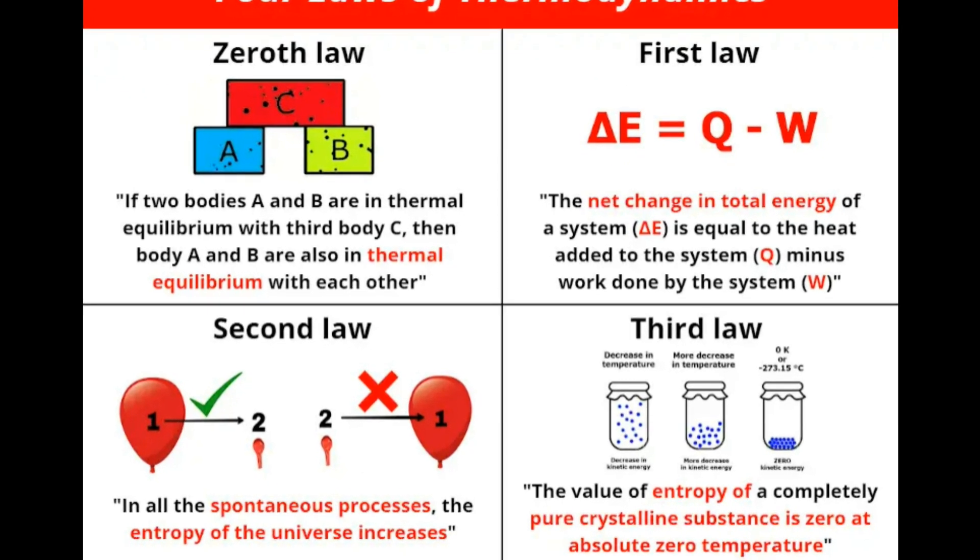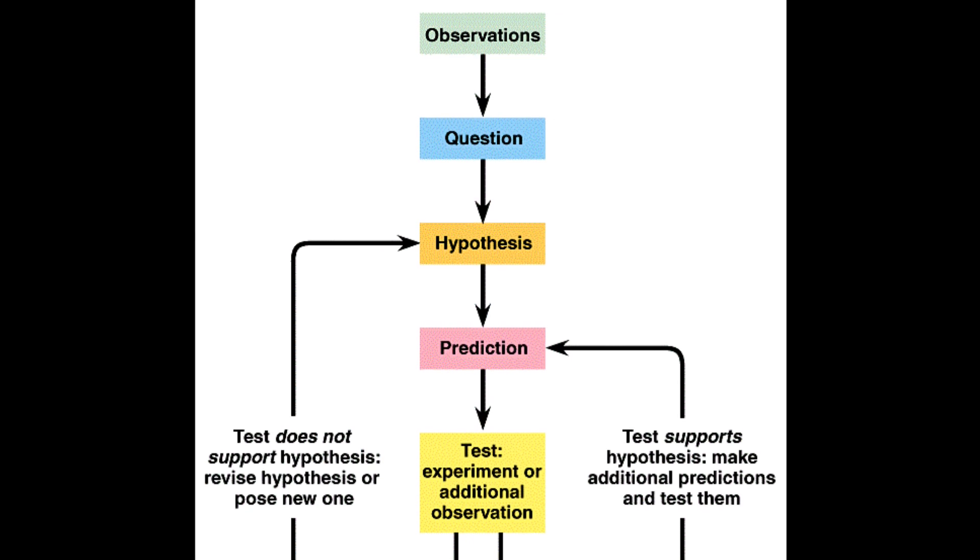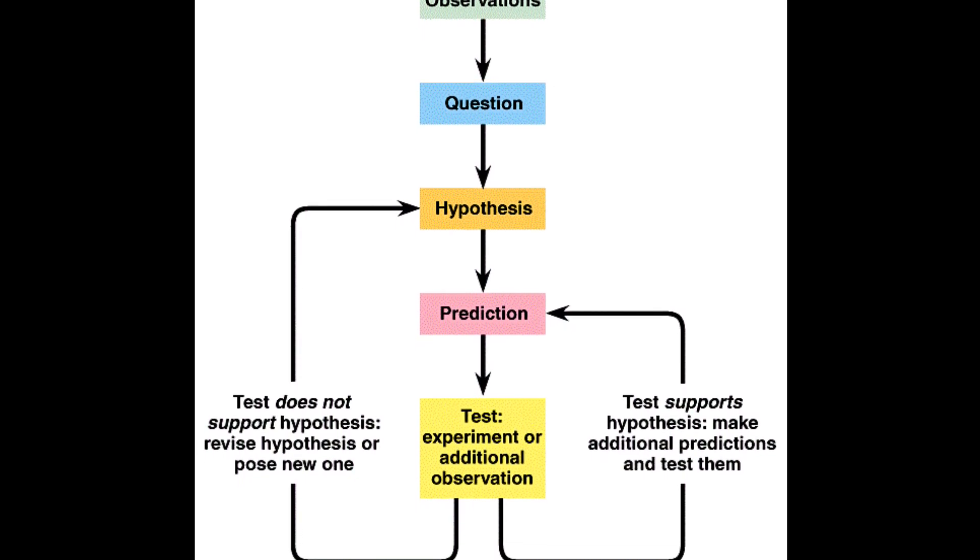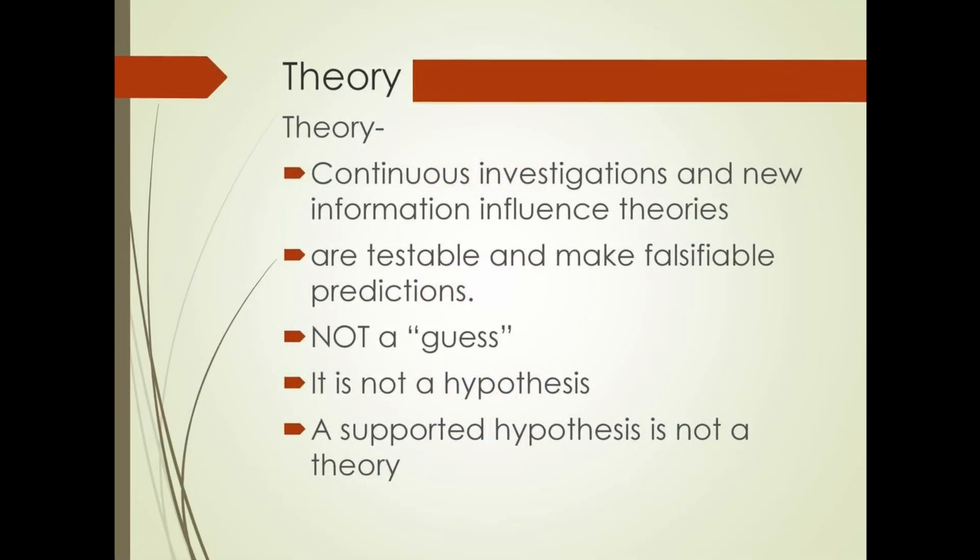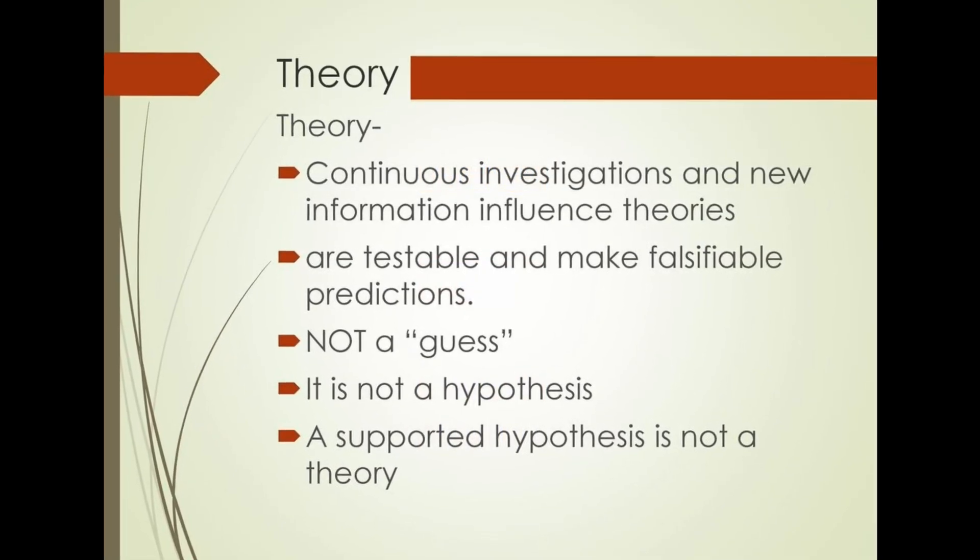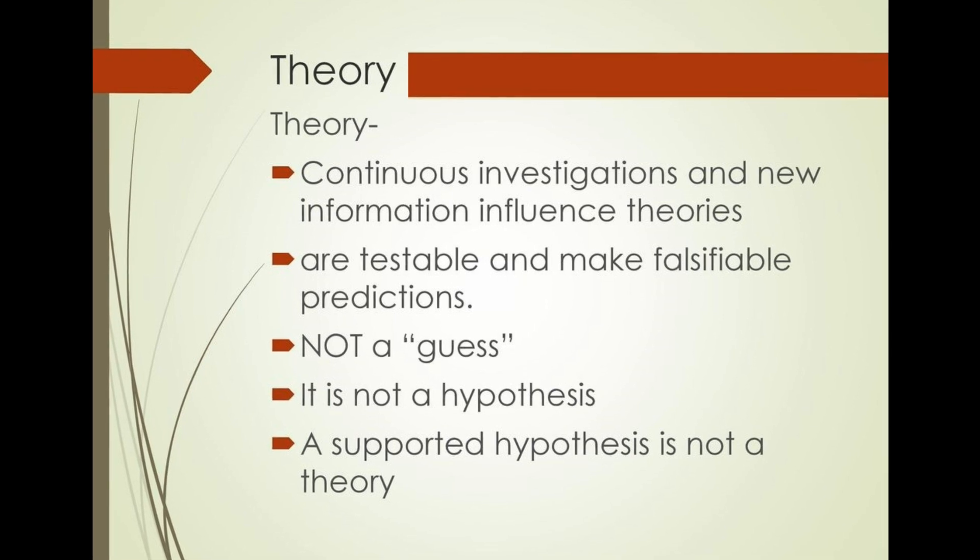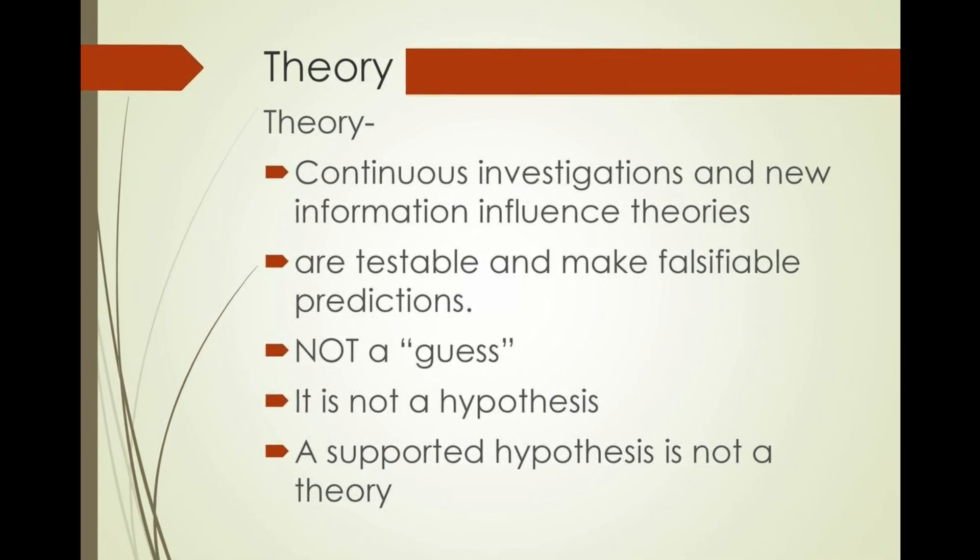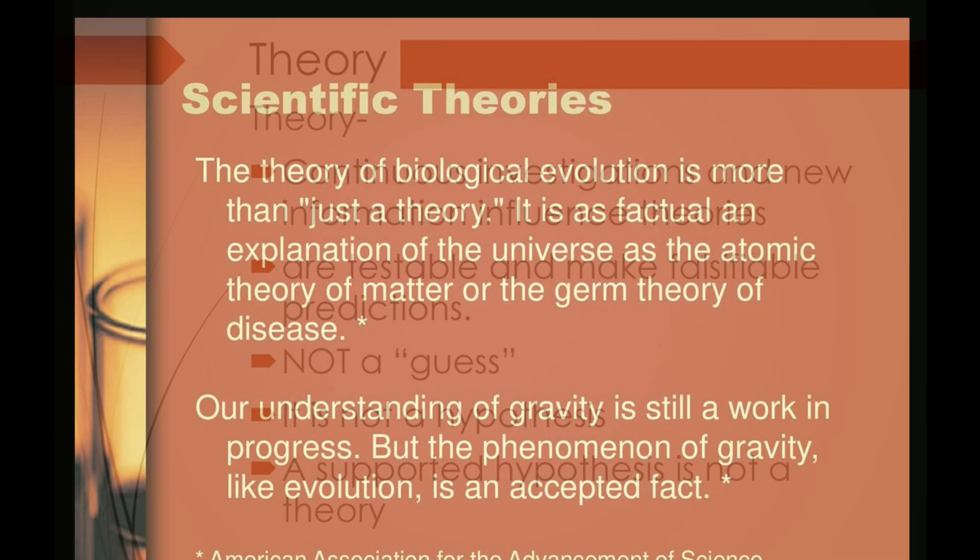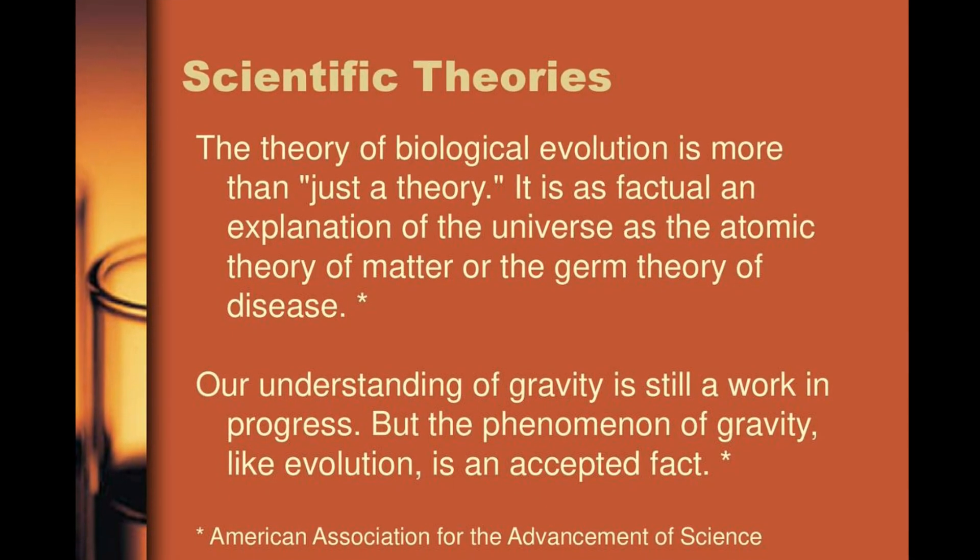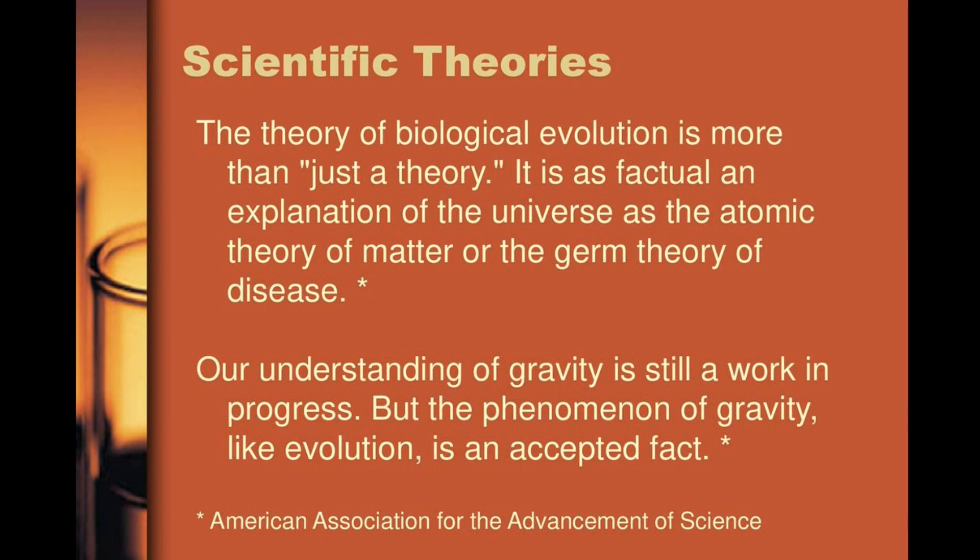To summarize, a hypothesis is a tentative explanation for a phenomenon, typically based on observed facts and laws. A theory is a hypothesis or several hypotheses that have undergone extensive testing and are supported by a wide body of evidence. A theory is the highest level of certainty for an explanation in science.